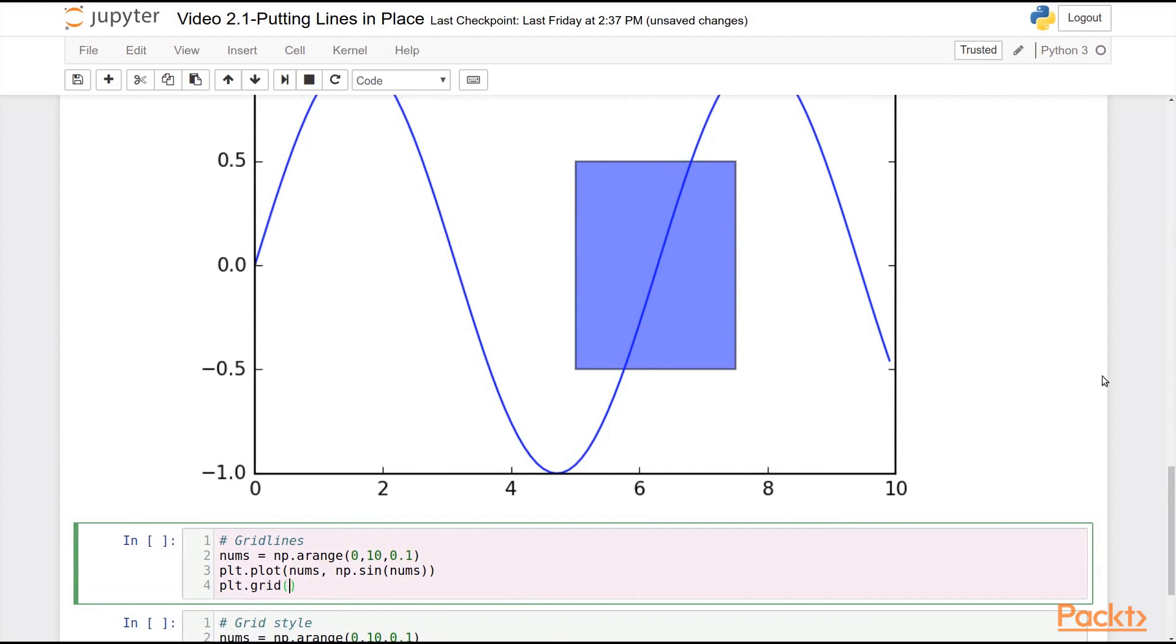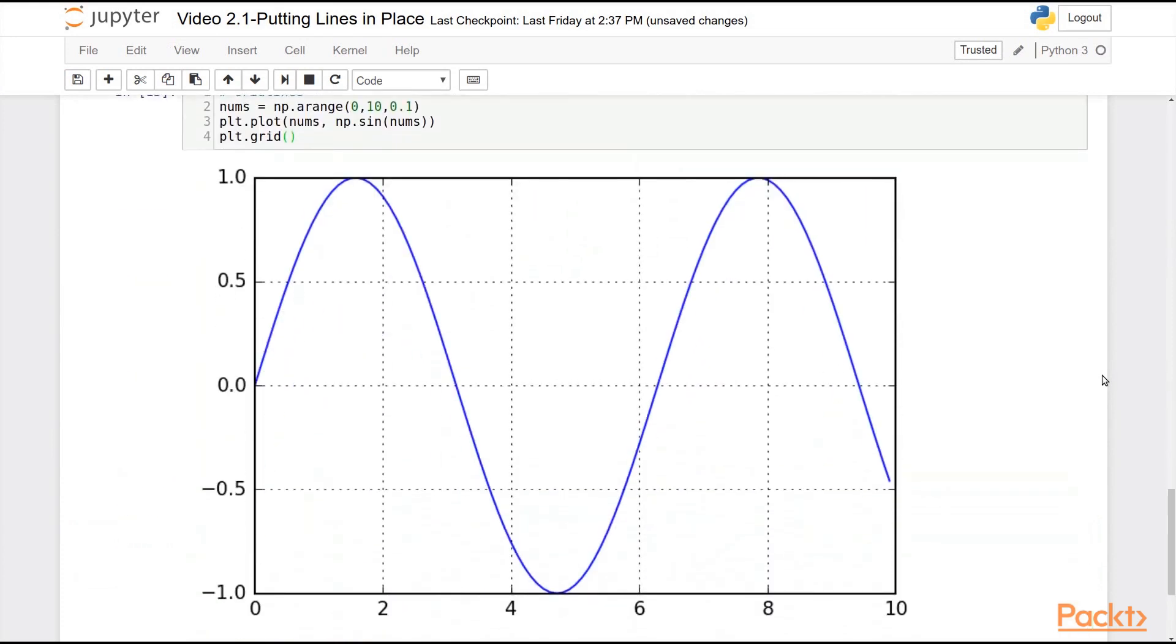You can also apply a background grid, which will lay down grid lines, show the reader and the viewer where each of the ticks extends far away from the axis. This is often times useful if you want the viewer to be able to draw direct numerical values by looking at pieces of the plot. So if it's important for your viewer to be able to actually look at a point or a piece of a line and draw out the numerical value of that, grid lines are an easy way of doing that.